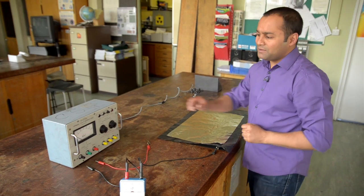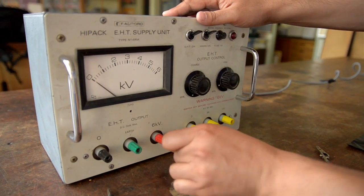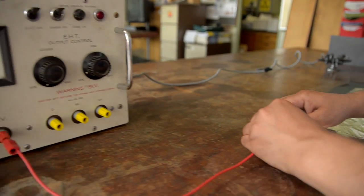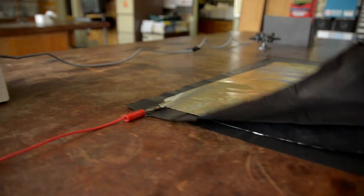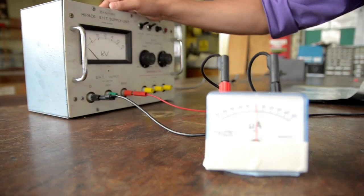You can charge this capacitor up using an extra high-tension power supply. I'm going to connect the positive terminal to the top plate, and I've got the bottom plate connected via this center-zero microammeter to the negative terminal.